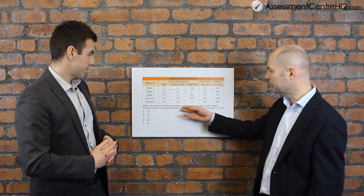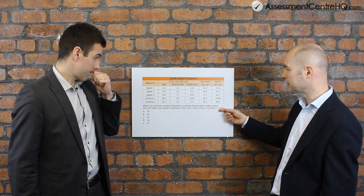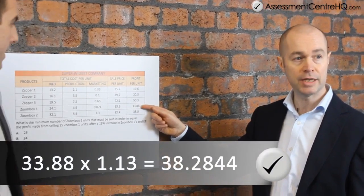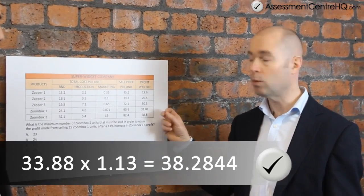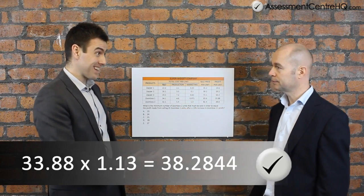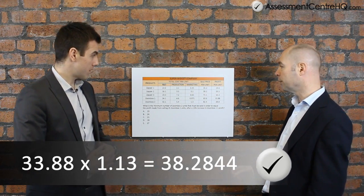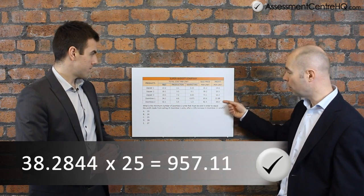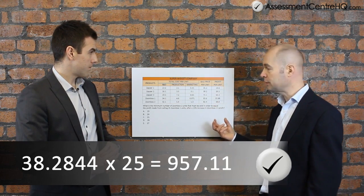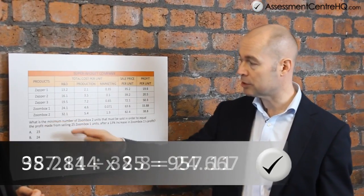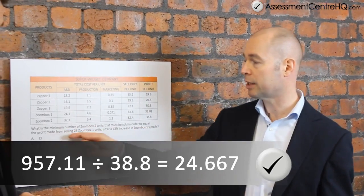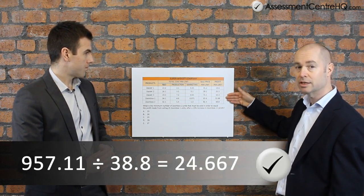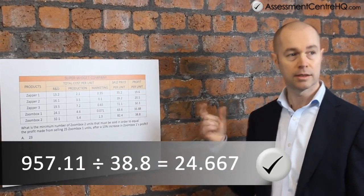The next thing is, I'll re-read the question. It says 'after a 13% increase in Zoom Box 1's profit,' so the first thing we're going to do is work out a 13% increase in Zoom Box 1's profit, which is this figure here. So, 33.88 — to increase it by 13%, we're going to multiply it by 1.13. What someone would actually type into the calculator: 33.88 times 1.13. It then says 25 Zoom Box 1's — that's the profit from 1 that we've just worked out. We're now going to multiply that by 25 to work out the profit from 25. We then divide that answer by the profit per unit of Zoom Box 2, after increasing by 13% and multiplying by 25. That will give me the answer.